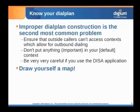The second item is to know your dial plan. When calls come into the dial plan, they come into different contexts. You really need to make sure you're not allowing callers from the outside to make outbound phone calls through your system without your knowledge. The best thing you can do is draw yourself a map of your dial plan — show where incoming calls are coming in, where trusted phones are authenticating, what context those are coming into — and make sure you're safe that way.